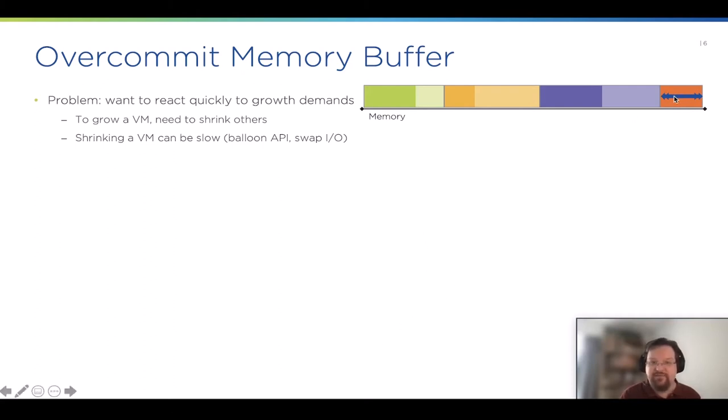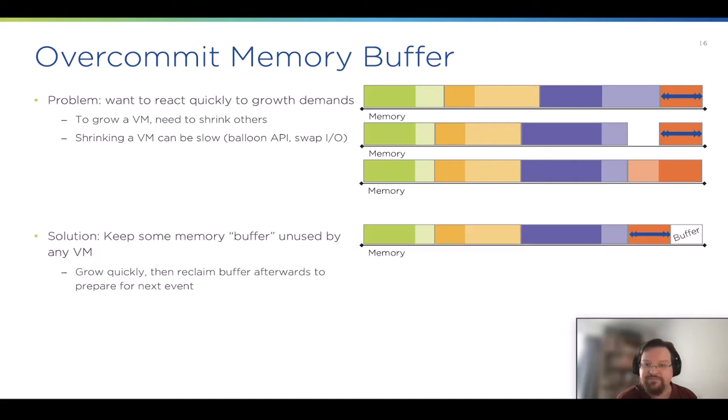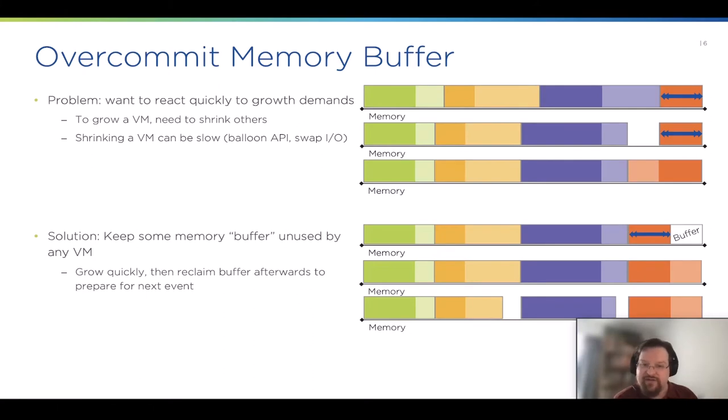Another problem is that when a VM starts swapping, it needs memory fast because performance is tanking. But if you used up all your memory, to grow one VM you first have to shrink other VMs. Shrinking a VM can be a slow operation. A solution here is to keep some buffer memory at all times that is not in use by any VM. When a VM needs memory, we can quickly grow into that buffer and then asynchronously reclaim memory from other VMs to replenish this buffer. There's a trade-off between reaction speed and overall memory efficiency, but this seemed to work well for us.